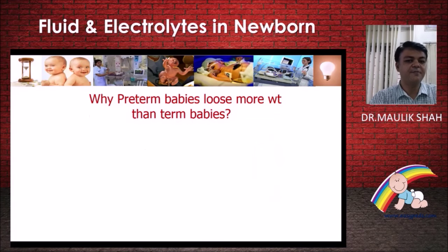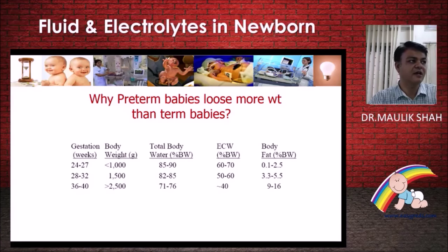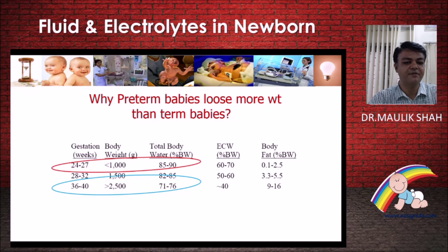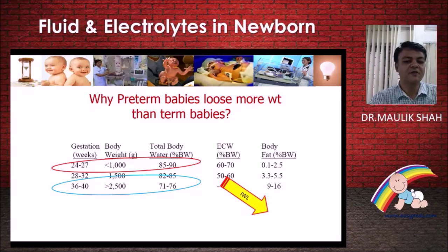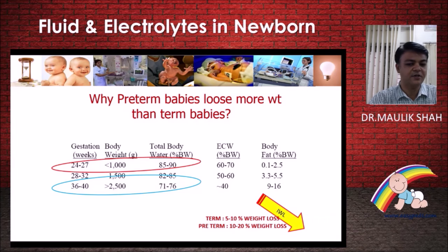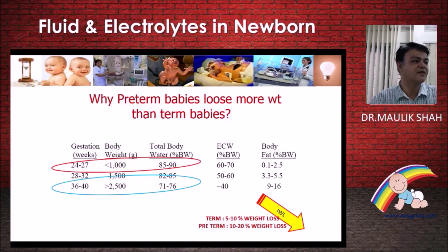Why do preterm babies tend to lose more weight than term babies? A 24–27 week baby has 85–90% body water while a term baby has about 70%. This water is lost as insensible water loss, which leads to weight loss. Term babies lose 5–10% of weight in the first week, while preterms can lose 10–20% — simply because they have more water and their skin barrier defenses against water loss are also weaker.